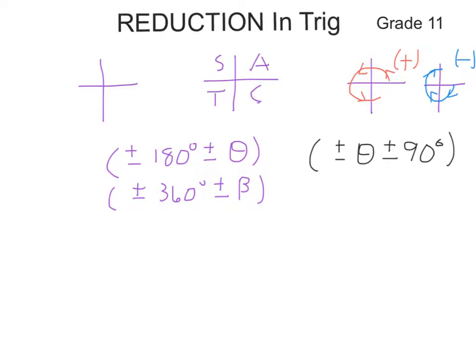Good day. In this video we're going to look at reduction in trig in Grade 11 and how to change these ratios to a ratio of theta. We're going to work on a Cartesian plane. We need to know the CAST diagram — where cosine, all, sine, and tan are positive. We need to know that a positive direction on a Cartesian plane is this way round, and a negative direction in trig is this way around.